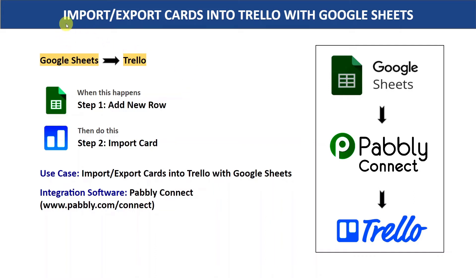Hey everyone, in this video we are going to learn how to automatically import or export your Trello cards directly from Google Sheets. As there is no direct connection between Google Sheets and Trello, we are going to integrate them with the help of an integration software, that is Pably Connect, so that whenever a new row is added in Google Sheets, Pably Connect will automatically add a new card in Trello. This process requires no coding knowledge and any non-technical person can easily use it.